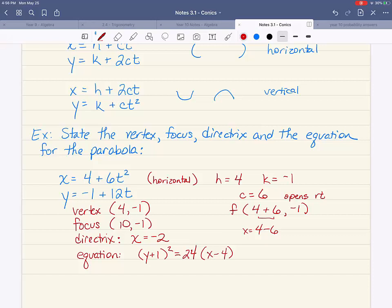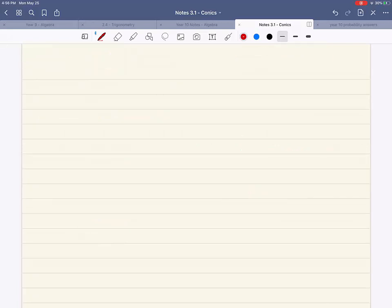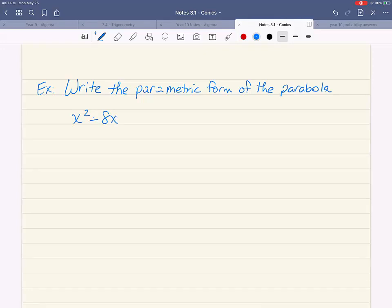Let's do another practice problem. This is a revision of completing the square. So this example will say, write the parametric form of the parabola. My formula is going to be as follows, x squared minus 8x plus 12y minus 20 equals 0.